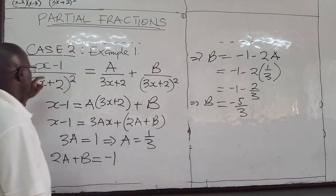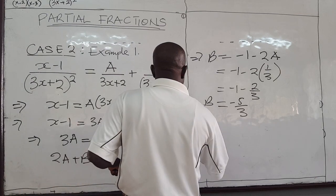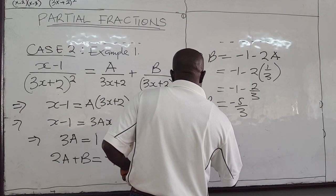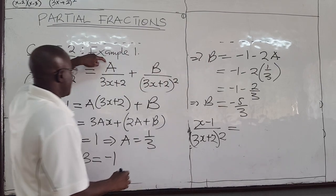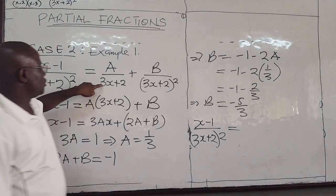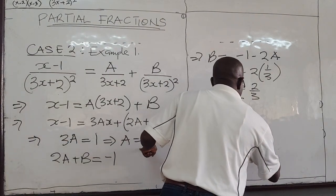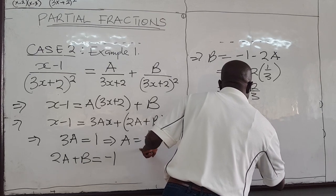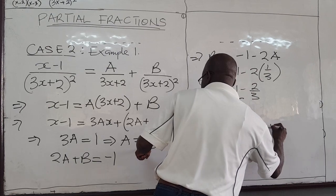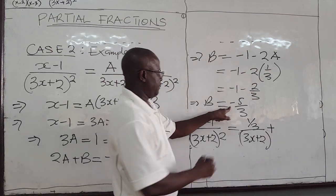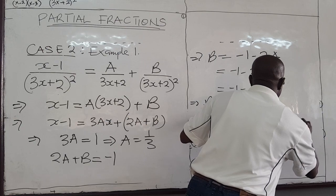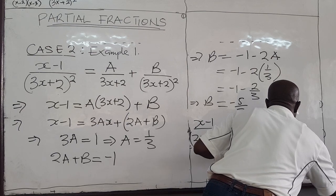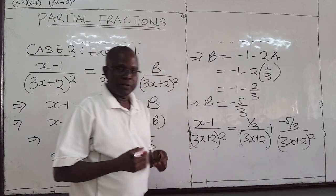So we know A and we know B, and so we can write our fraction in this form. x minus 1 over 3x plus 2 squared can be written as A over 3x plus 2. A is 1 over 3, all over 3x plus 2, and then B is negative 5 over 3 all over 3x plus 2 squared. So that is the solution.